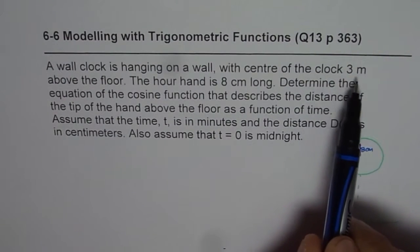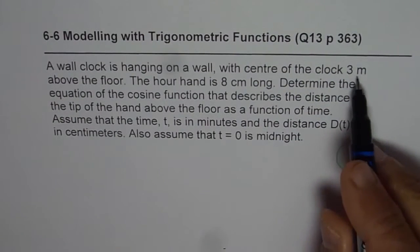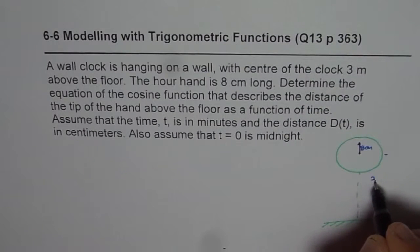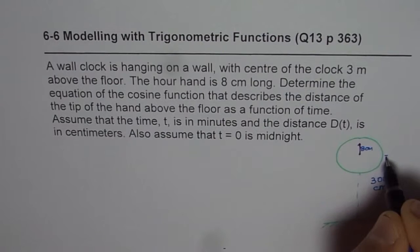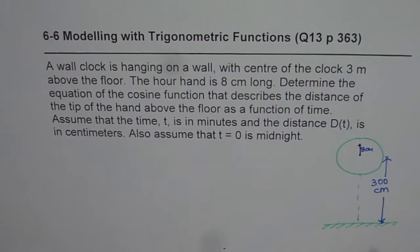And the clock is 3 meters above the floor. So the height of the clock is 3 meters. So convert meters to centimeters. It becomes 300 centimeters. So it is very important to convert to same units. So that is the height of the clock.